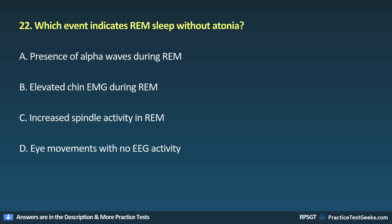Question 22: Which event indicates REM sleep without atonia? A. Presence of alpha waves during REM, B. Elevated chin EMG during REM, C. Increased spindle activity in REM, D. Eye movements with no EEG activity.